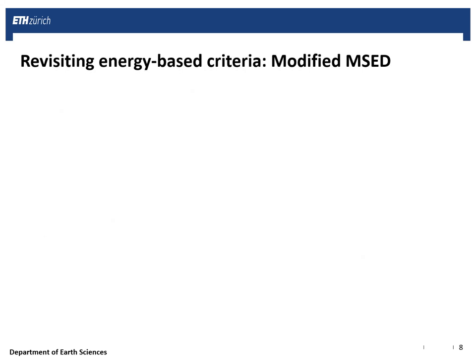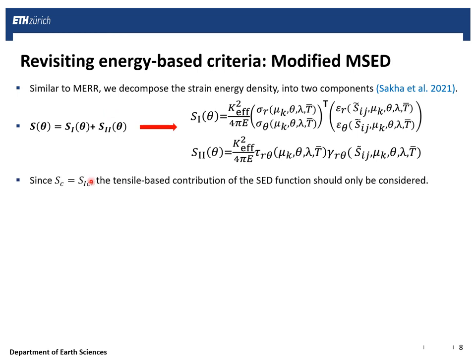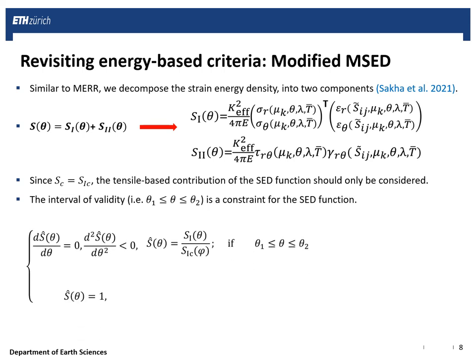We use the same approach to revisit the MSED criterion. Similar to MERR, we decompose S-theta into two contributions: S1 caused by sigma-r and sigma-theta, and S2 caused by the shear stress. Since the critical value SC used is S1c, corresponding to tensile-based failure, we only include the contribution of S1 to normalize the SED function. We also confine this normalized function to an interval where opening can take place — where epsilon-theta is positive.